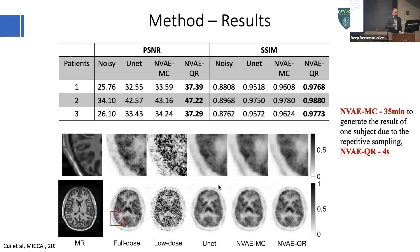Here, the top shows results for a few patients, including PSNR and structural similarity metrics. The bottom shows the images — the input is quite noisy — and the result from quantile regression is quite nice, giving you more contrast. Importantly, when we previously used the CVAE with Monte Carlo simulation to get the full distribution, it took 35 minutes. Now it takes four seconds, making this method much more practical for clinical use.